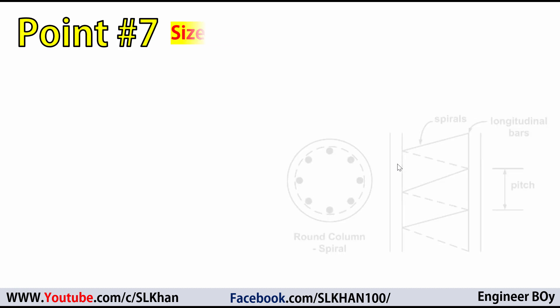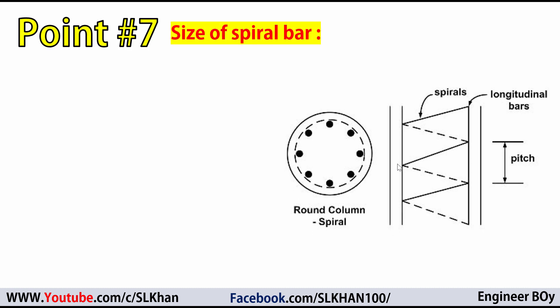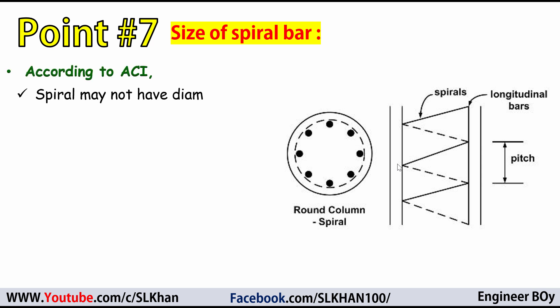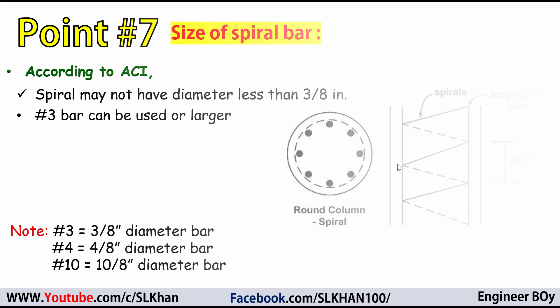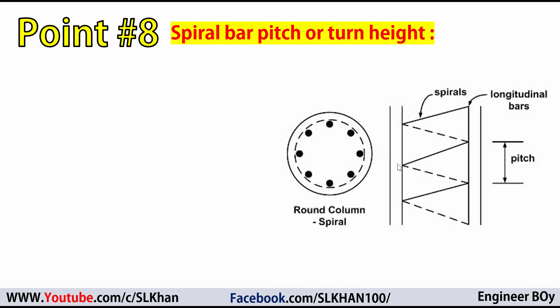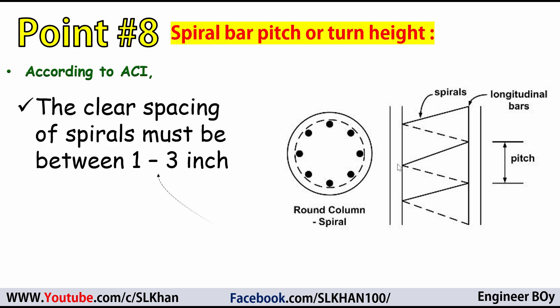Point number 7 is about spiral bar diameter. According to ACI, a spiral may not have a diameter less than 3/8 inches, meaning a number 3 bar or larger must be used. Point number 8 is about spiral pitch — the clear spacing of spirals must be between 1 and 3 inches. If you like these types of videos, please subscribe and press the bell icon so you never miss an update.